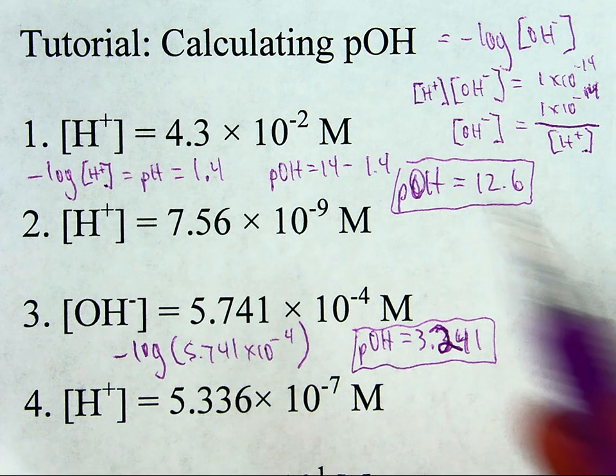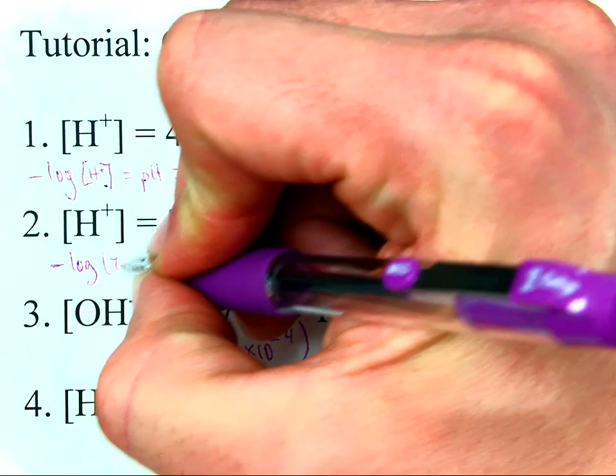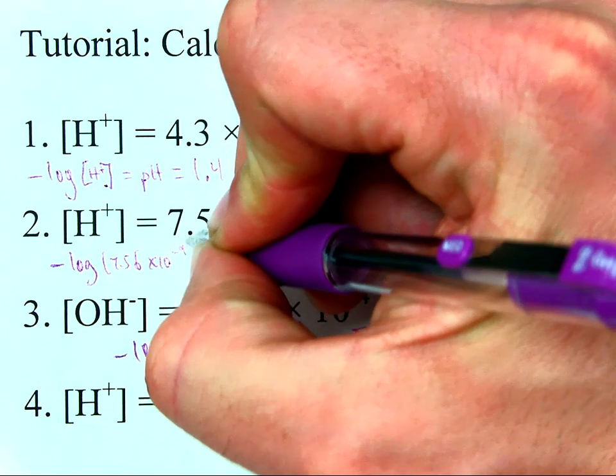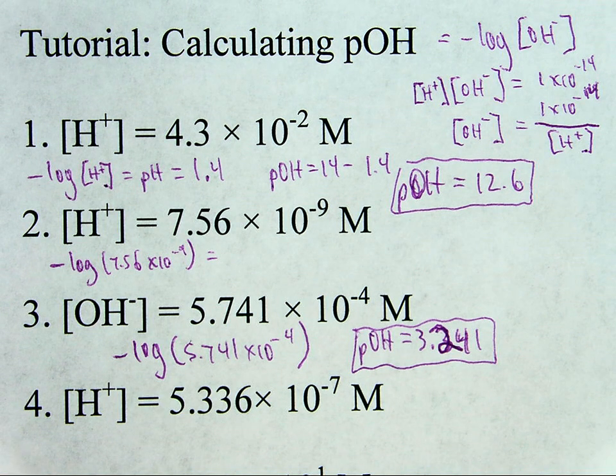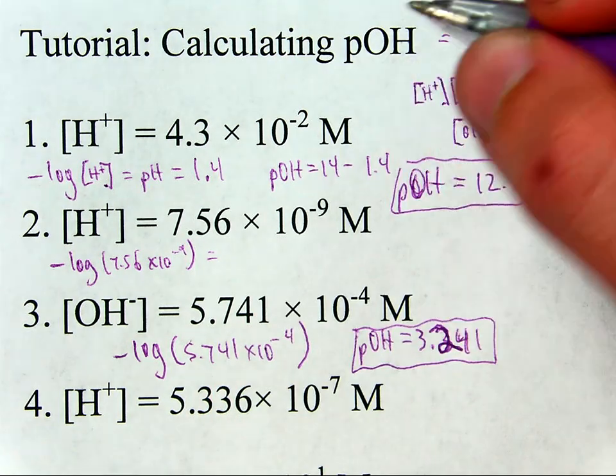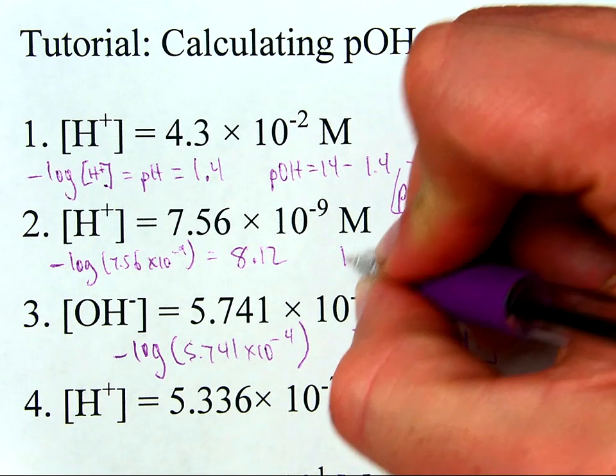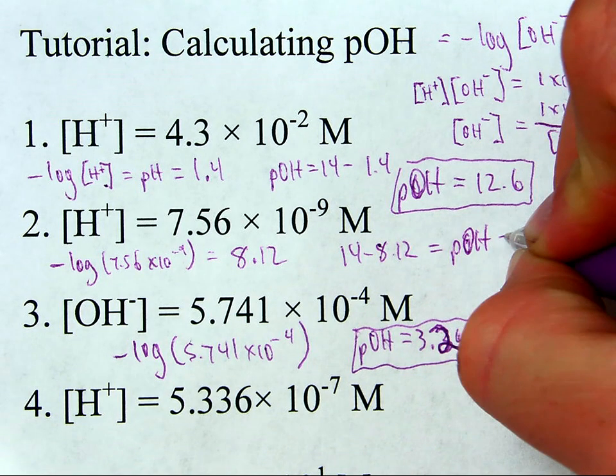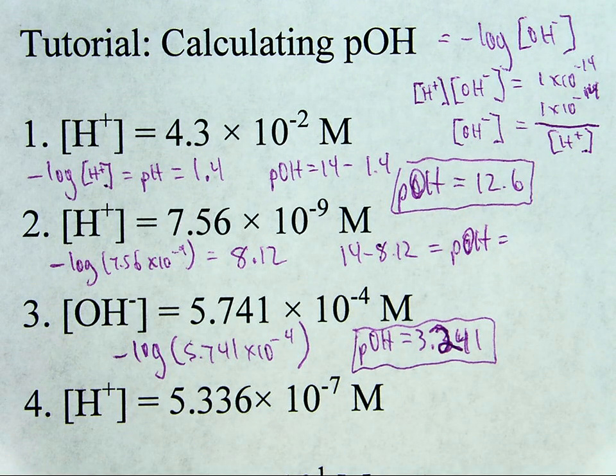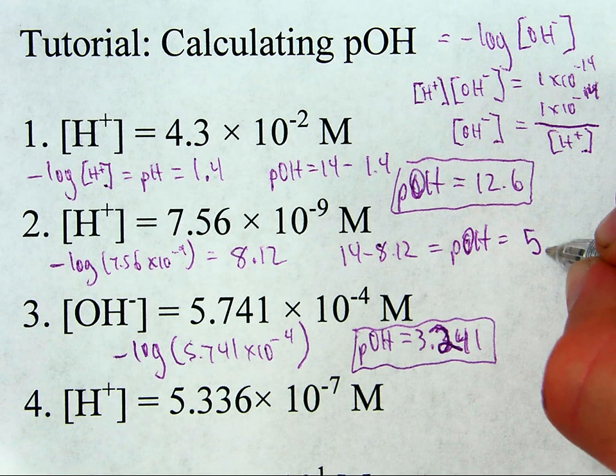So, with this one, the negative log of 7.56 times 10 to the negative ninth is going to give me the pH of 8.12, called 3 sig figs. And then 14 minus 8.12 equals the pOH, which is equal to 5.88.